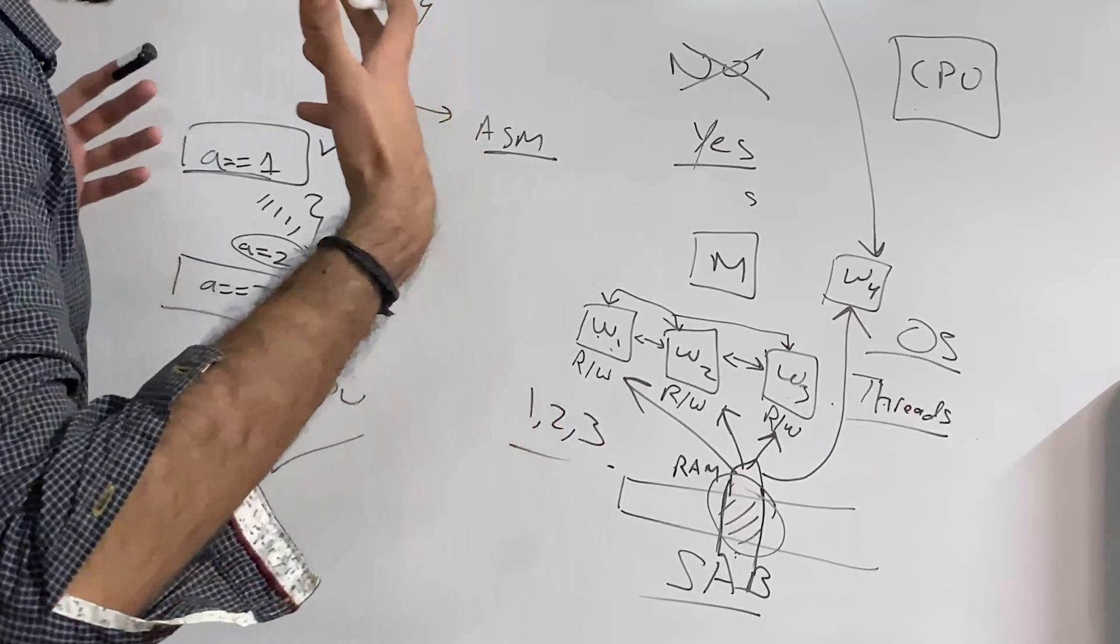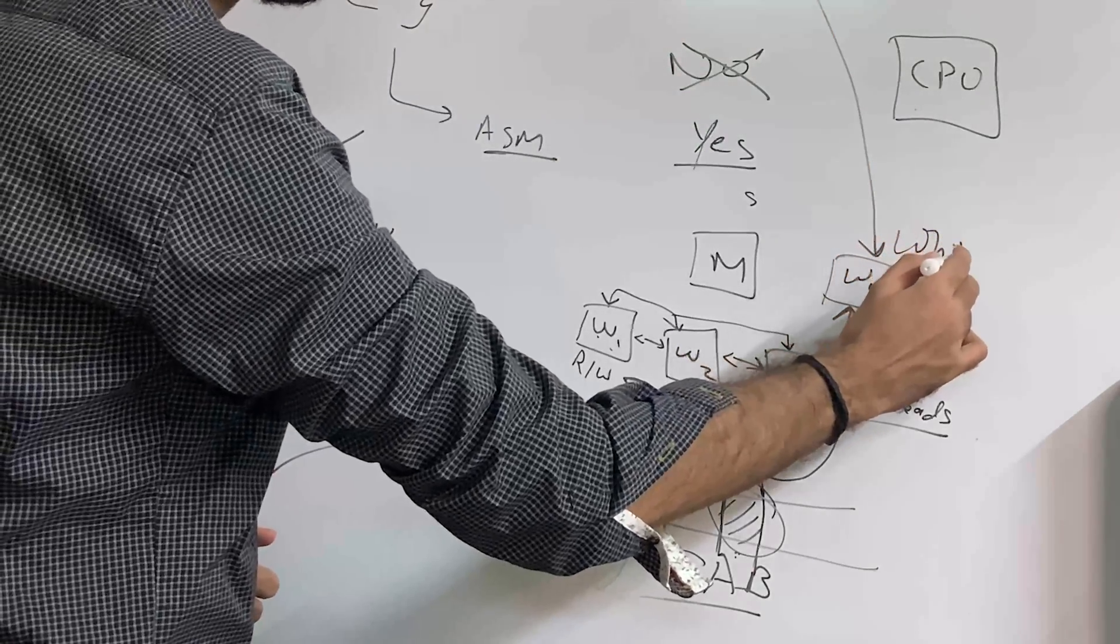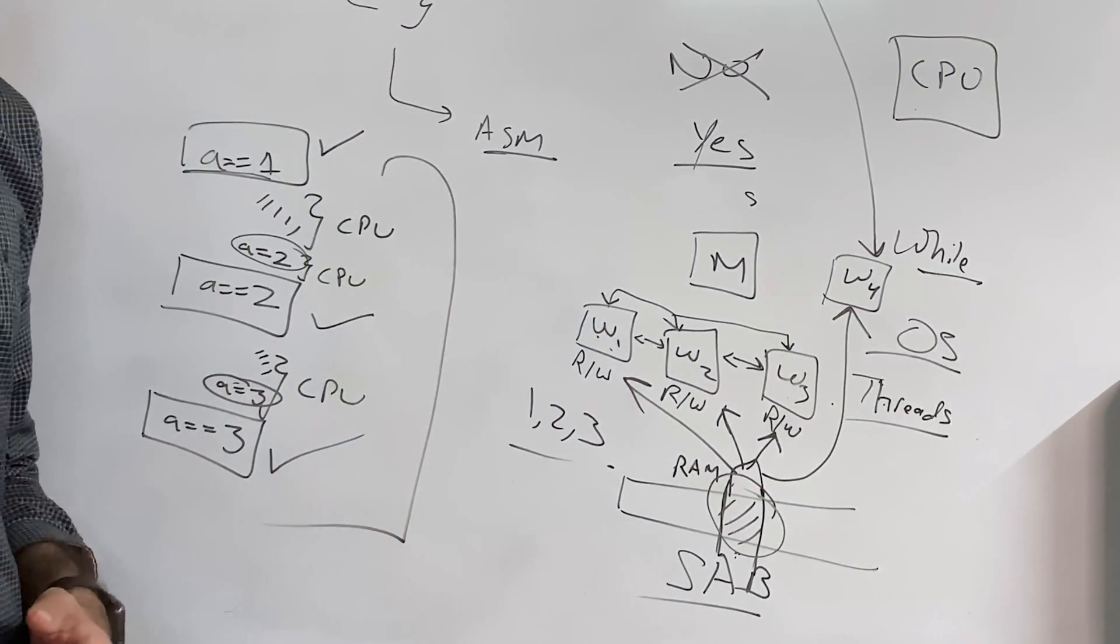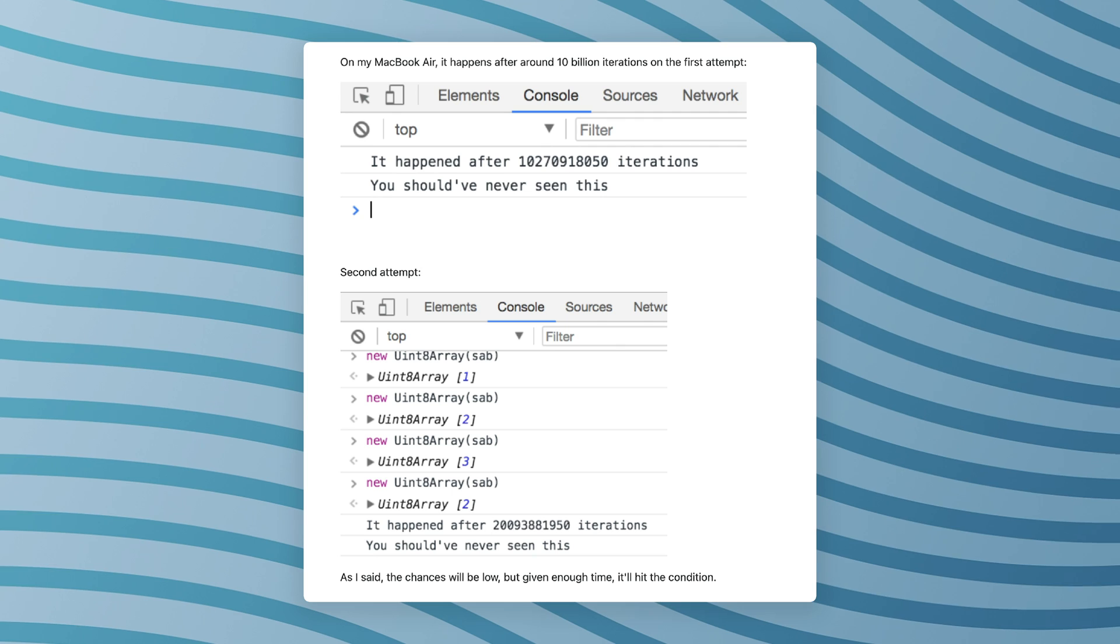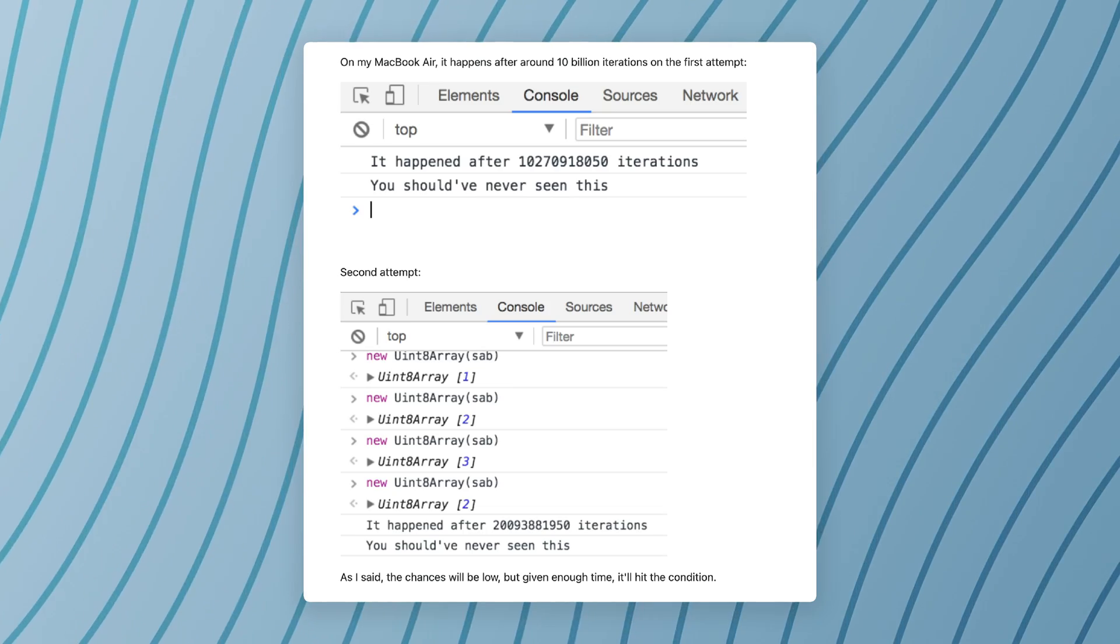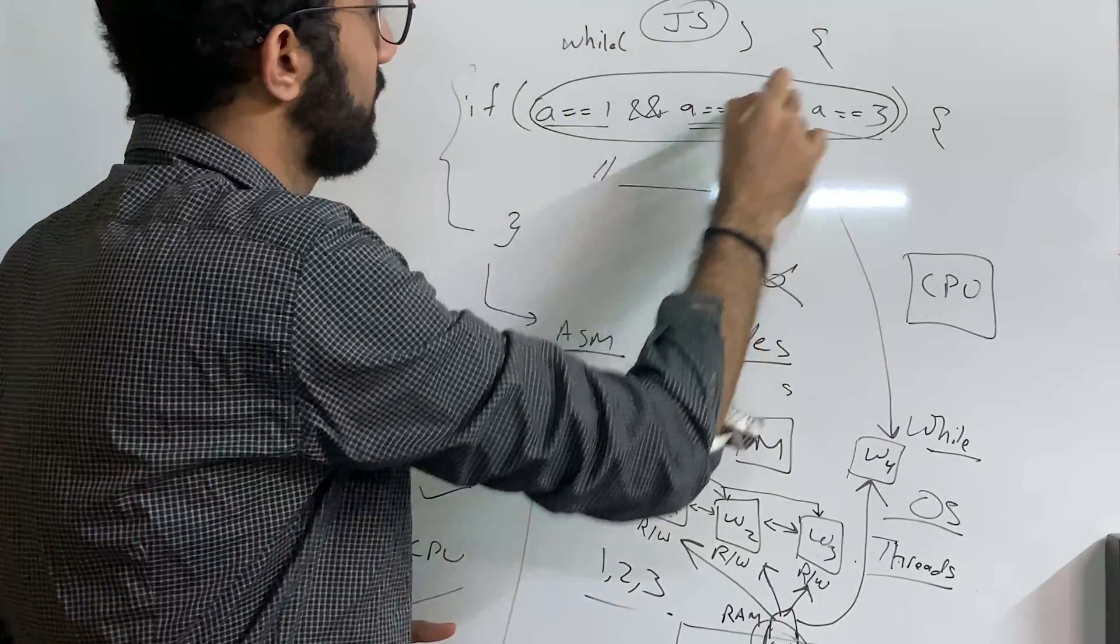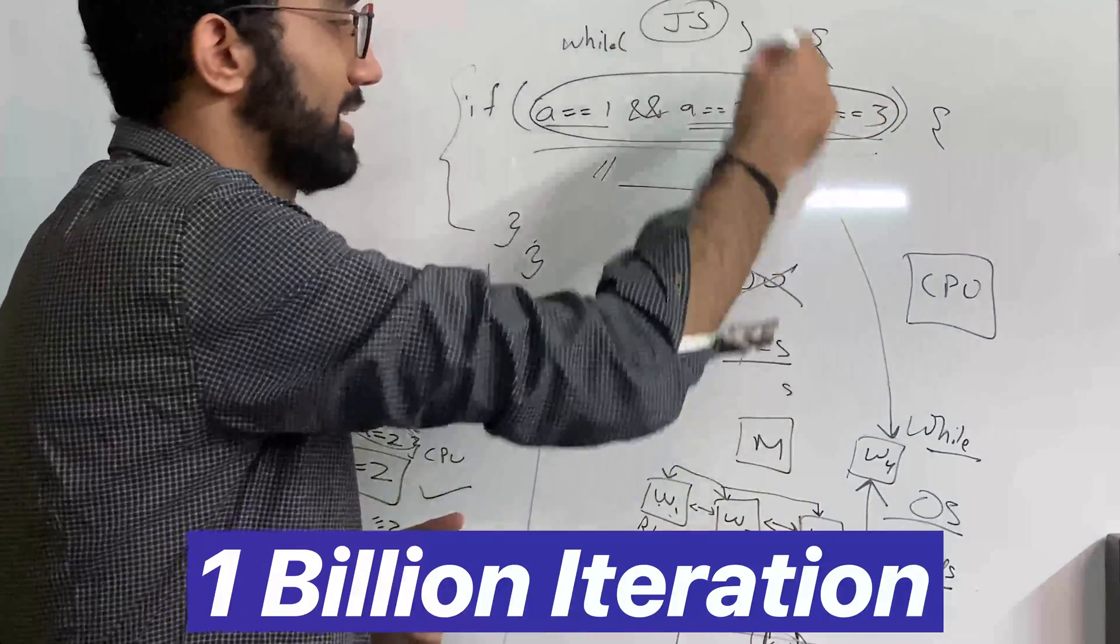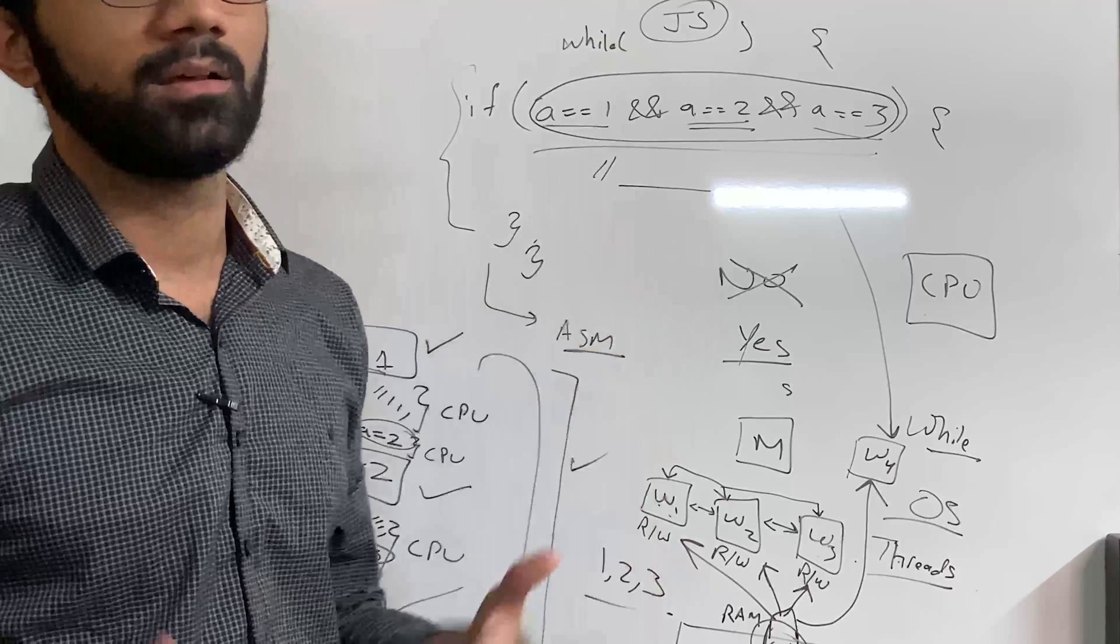Now what we are doing in these three workers is that we are randomly assigning a value between one, two, and three to this shared array memory, which is the shared memory with worker four. Now what would happen is somewhere down the line, I mean, if you just put this condition check in a while loop, while this is not true, just keep on executing, somewhere down the line, your CPU would hit this exact combination. It might be very soon, it might be very, very late, but it will happen. For example, the answer which I did, which is the exact answer I did on Stack Overflow a few years back. In that answer, when I was using my MacBook Air, it happened after like a billion iterations. So if this was in a while loop on my MacBook Air, this condition was met after one billion iterations ran.